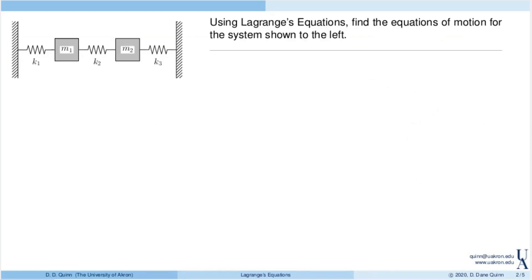Here's the problem I'd like to look at. I have two masses: one block has mass m1, the second has mass m2. They are chained together with springs with spring constants k1, k2, and k3. I would like to find the equations of motion for this system.